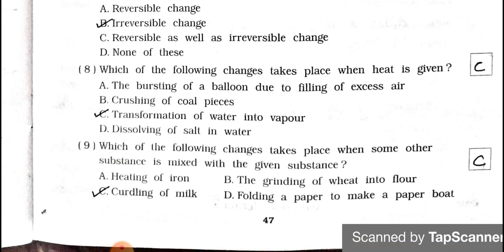Number 8. Which of the following changes take place when heat is given? A the bursting of a balloon due to filling of excess air, B crushing of coal piece, C transformation of water into vapor, D dissolving of salt into water. Answer is option C, transformation of water into vapor.